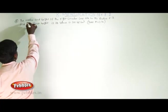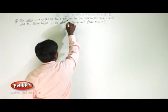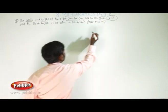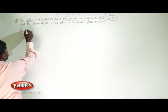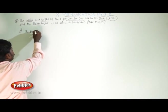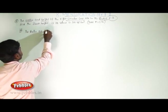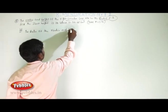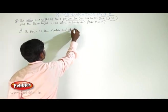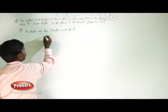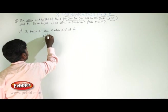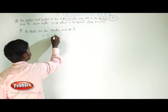The radius and height of the circular cone have a ratio of 2 to 3. That is, radius to height is equal to 2 is to 3.